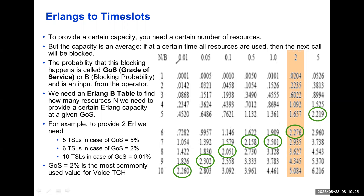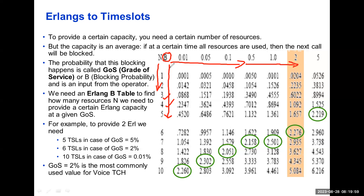Now, how to read the Erlang B table. We can see here: N is the number of physical channels — one, two, three, four, five — and in the horizontal direction it is the blocking probability B. From 0.01 percent, 0.05 percent, these blocking probabilities increase in the right direction. In the vertical downward direction, the number of physical time slots increases. The blocking probability is also known as grade of service — what percentage of blocking is allowed in the network. This is the basis of calculating the Erlang capacity, and the number of physical channels defines the Erlang handling capacity.